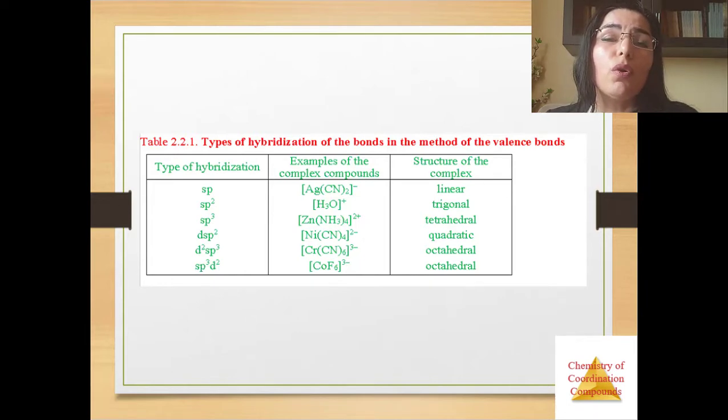The formed bond between a complex agent and the ligand is a donor-acceptor one. The orbitals of a central atom participating in the formation of the bond undergo hybridization. The type of hybridization determines the geometric structure of the complex compounds, and it depends on the number and nature of the ligands. Some types of hybridization are presented in this table.